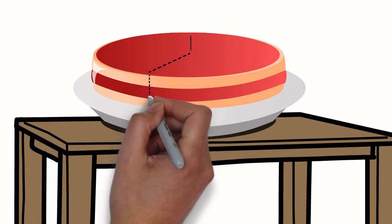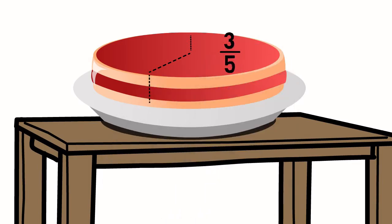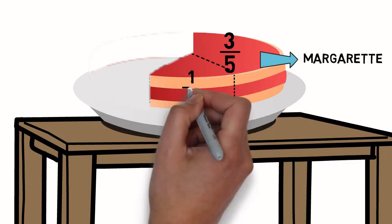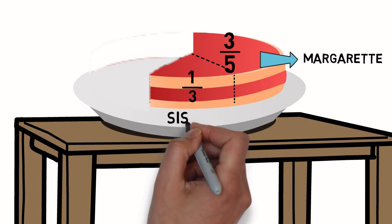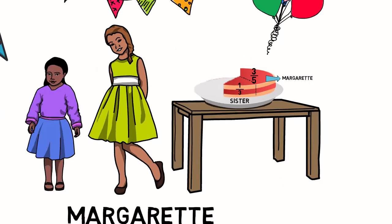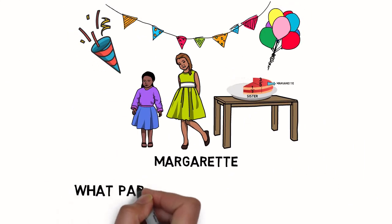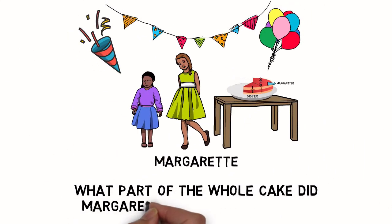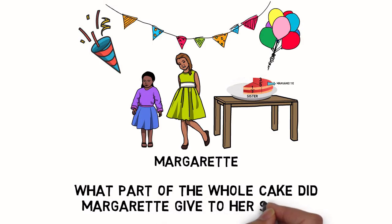She had three-fifths of the cake. She gave one-third of it to her sister. What part of the whole cake did Margaret give to her sister?